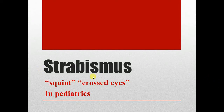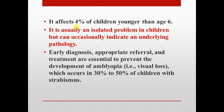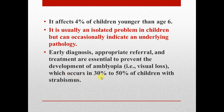Our subject today is strabismus in pediatrics. It affects 4% of children younger than age 6 years. It is usually an isolated problem in children but can occasionally indicate an underlying pathology. Early diagnosis, appropriate referral and treatment are essential to prevent the development of amblyopia, which is a visual loss occurring in 30-50% of children with strabismus.